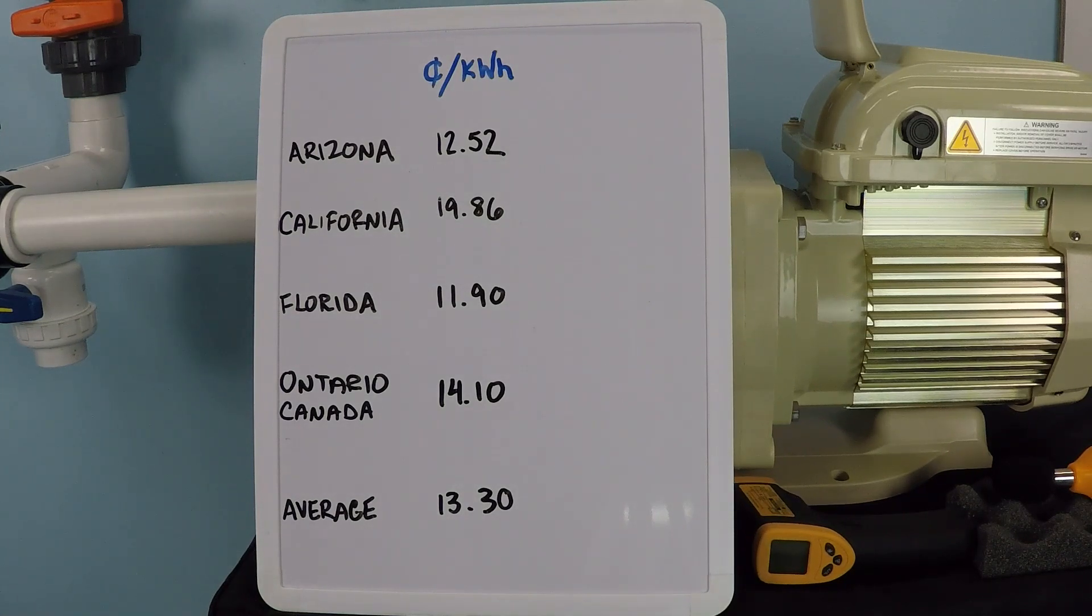It could range up to as high as 30 or more cents per kilowatt hour in places like Hawaii, or I think it's 25 cents or more in Alaska. As you can see on the screen here, California is just about 20 cents per kilowatt hour.